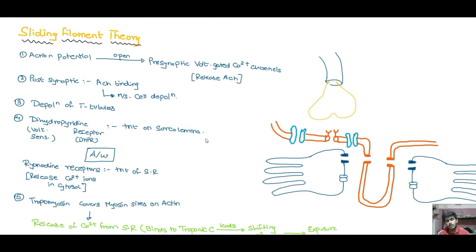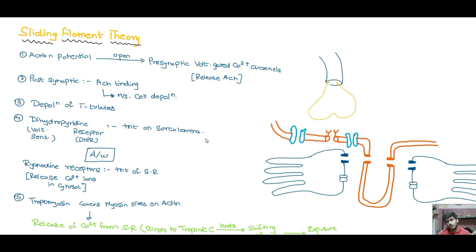Finally, we will discuss the sliding filament theory, which involves both skeletal muscles and cardiac muscles. However, the starting part of cardiac muscle contraction is regulated with the help of pacemaker cells and the autonomic nervous system — it has beta-1 receptors in some positions and beta-2 receptors in others. In the sliding filament theory, the myosin filaments bind the actin filament and push it, leading to contraction, while titin brings it back to the normal position.